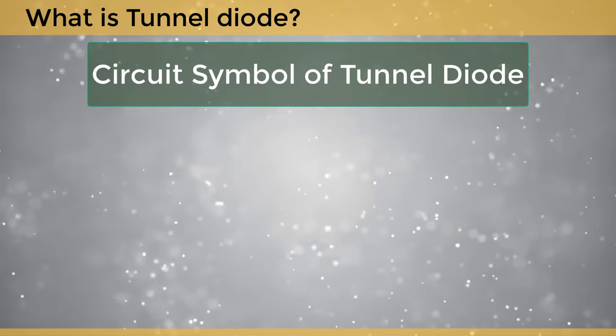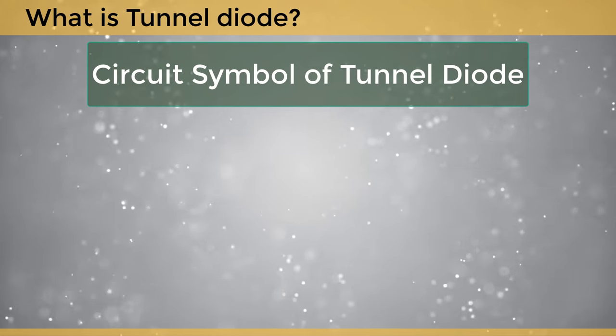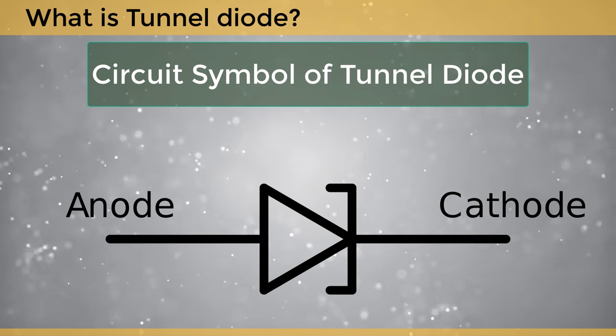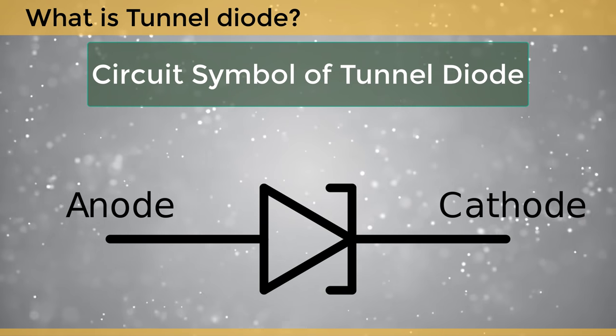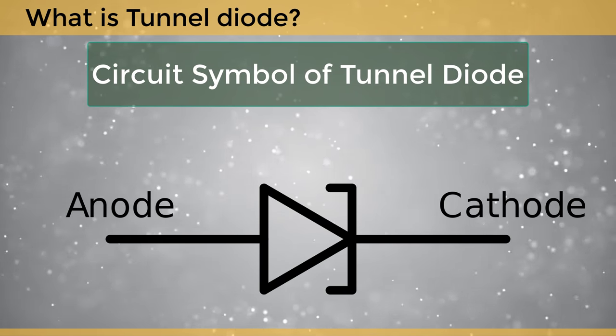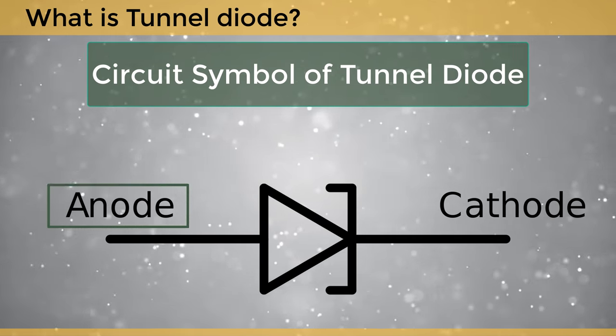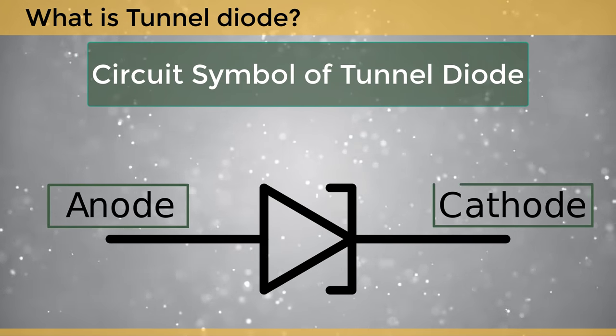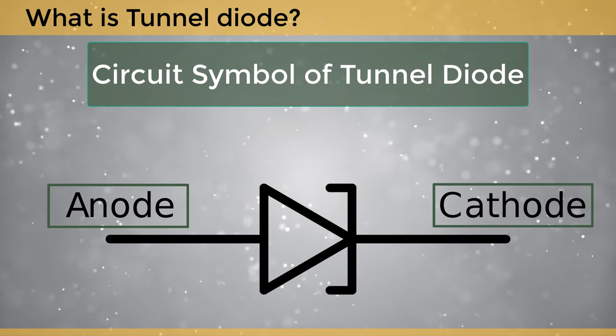The circuit system of a tunnel diode is shown here. In a tunnel diode, the p-type semiconductor acts as an anode and the n-type acts as a cathode.